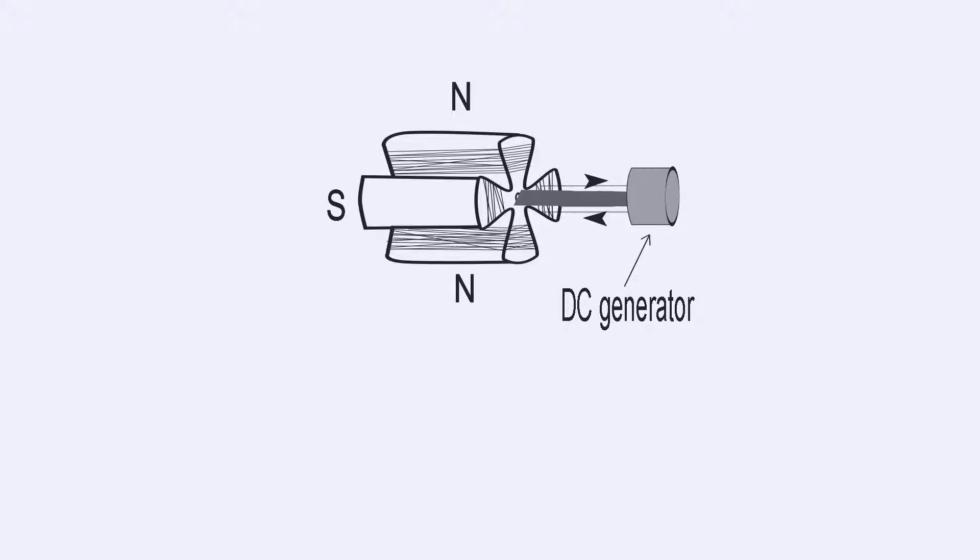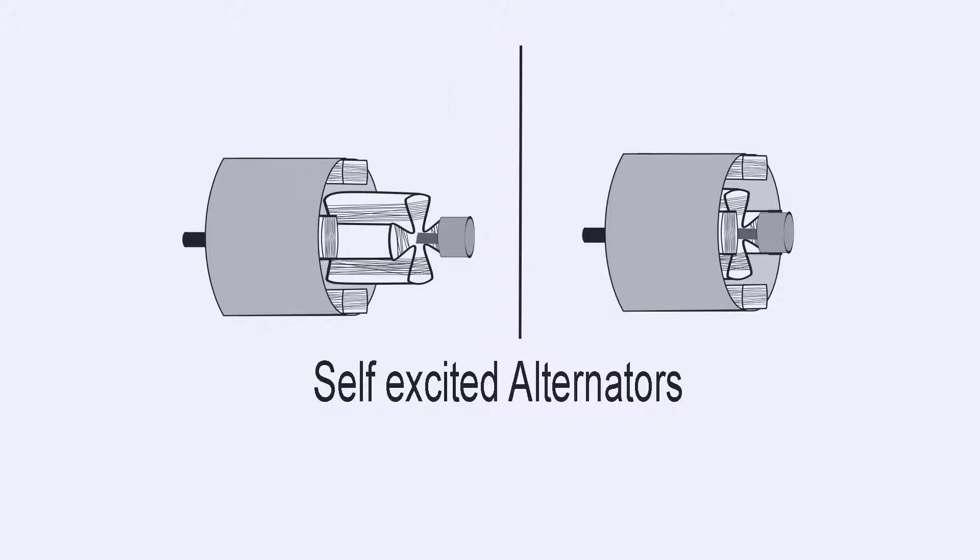DC current is supplied from an external source, or from a small DC generator fitted on the same prime mover. Such alternators are called self-excited.